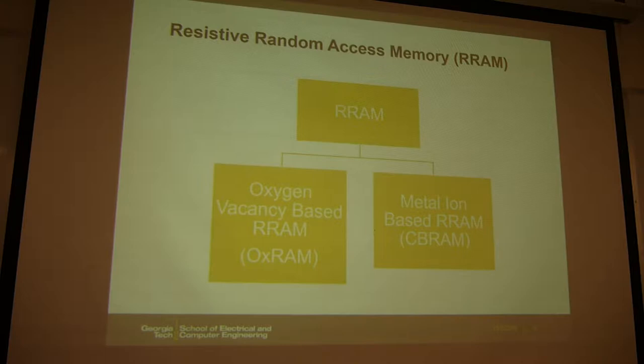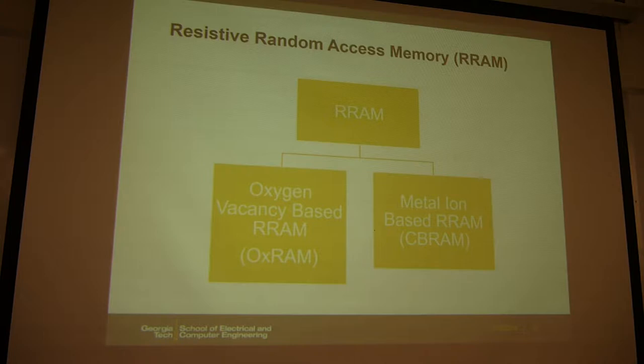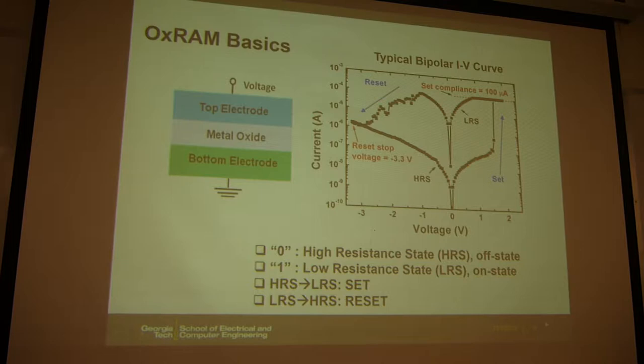RRAM is one of the emerging technologies we've discussed before, and it has two subcategories. One is called Oxide RRAM, which is based on oxygen vacancy. The other is called CB-RRAM, short for conductive bridge random access memory, which is based on metal ion diffusion. We will look at the mechanisms next.